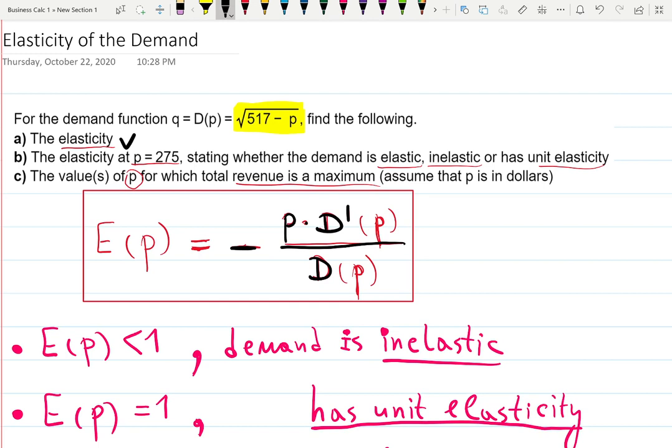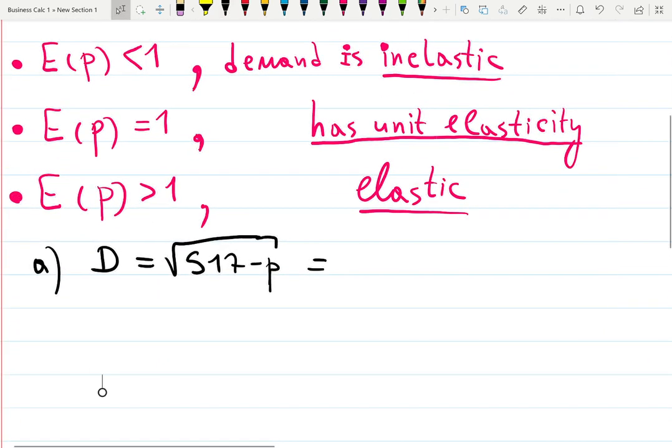The first question is to find a general formula for the elasticity using the formula we just reviewed. The demand function is given as the square root of 517 minus p, so we want to find the derivative of that first. If you're not feeling comfortable working with radicals, rewrite it as (517 - p)^(1/2).